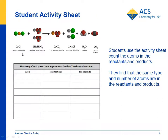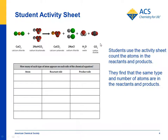For the reaction that students do, you can show them the chemical equation for it. It's calcium chloride and sodium bicarbonate. If you react those, you get calcium carbonate, which is the white precipitate, sodium chloride — which is familiar to students as salt — water, and the gas produced is carbon dioxide.